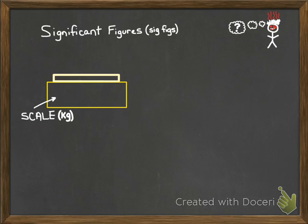Let's take the example of a scale — a produce scale — and we've got some sort of big, delicious apple that's been freshly picked. It's been put on the scale, and the scale is going to read 0.4. Now, if the scale units are kilograms, 0.4 kilograms is actually quite a large apple. Now, we don't know what the next digit is. We only know what the tenths place is. That could be a 1, it could be a 7 — we don't know.